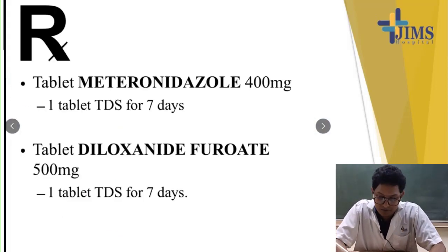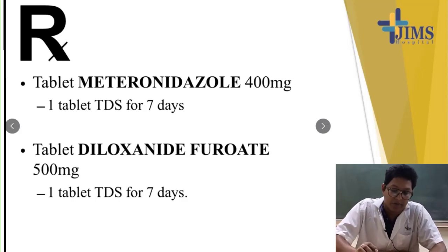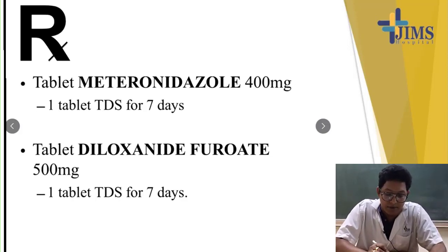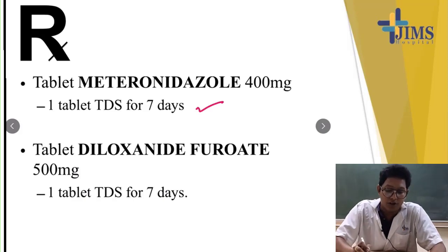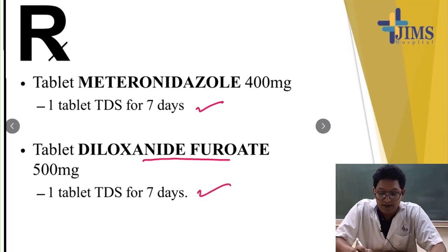Coming back to the problem: the patient presented with loose stool mixed with blood and mucus. You will prescribe tablet metronidazole 400 mg, one tablet three times daily for 7 days, along with a luminal amoebicide — diloxanide furoate 500 mg, one tablet three times daily for 7 days.